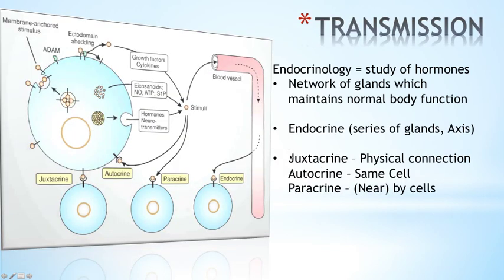There is also juxtacrine secretion. Juxtacrine secretion requires a physical connection between two cells to transmit the information or stimuli. So let's say this cell produces a growth factor, cytokine, or chemokine — it would put it on its cell surface as a ligand, and the other cell would then bind through its receptor directly. This is a direct physical connection.